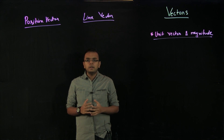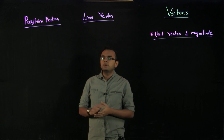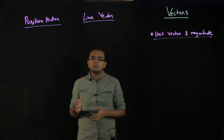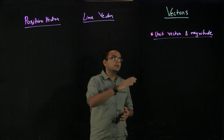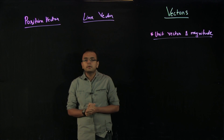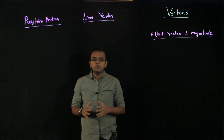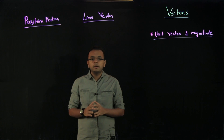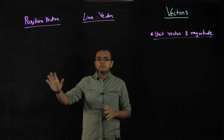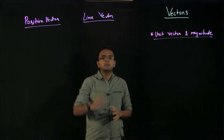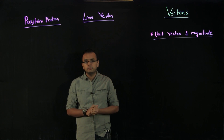I believe there is a lot of confusion among students about even the basic definitions of vectors — like position vector, line vector, unit vector, and magnitude. I think if you can really focus on this video and try to understand the difference between position vector and line vector, that will clarify a lot of things for you.